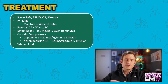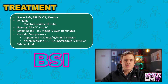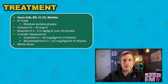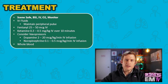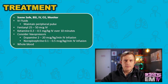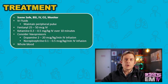Treatment for this person begins with the mantra: scene safe, BSI, IV, O2, monitor. Definitive treatment requires surgery — everything we do pre-hospitally is simply buying time to get this patient to the operating room. Fluid replacement is key, so I'll administer IV fluids, but only enough to maintain peripheral pulses. This concept is known as permissive hypotension.